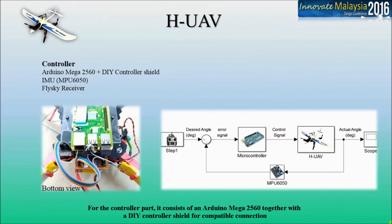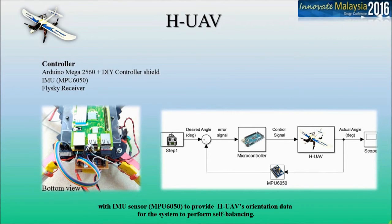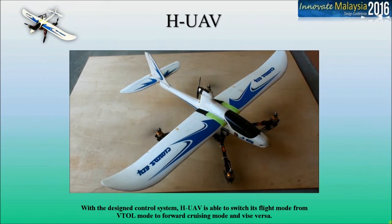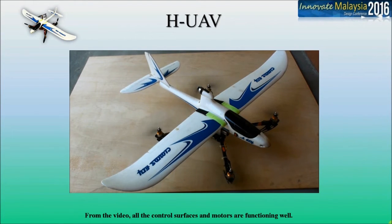For the controller part, it consists of an Arduino Mega 2560 together with a DIY controller shield for compatible connection with the IMU sensor and MPU6050 to provide HUAV's orientation data for self-balancing. Meanwhile, the RC receiver allows the user to control the HUAV's motion using an RC transmitter. With the designed control system, HUAV is able to switch its flight mode from VTOL mode to forward cruising mode and vice versa. From the video, all the control surfaces and motors are functioning well.